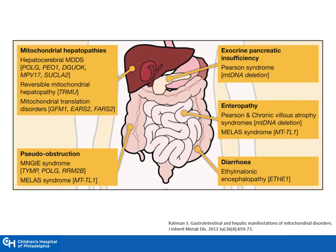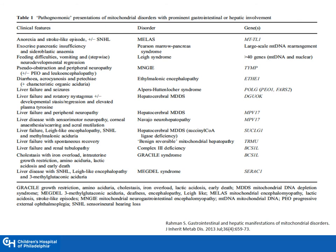This slide reviews how different mitochondrial diseases can affect the different organs of the GI tract — from the liver to the pancreas to the small bowel to the large bowel. Also listed here are the genetic defects associated with these mitochondrial diseases. This table lists detailed pathognomonic presentations of mitochondrial disorders that have prominent GI or hepatic involvement, and more than 50% of the clinical features actually involve the liver.